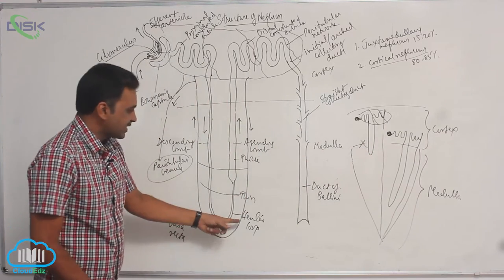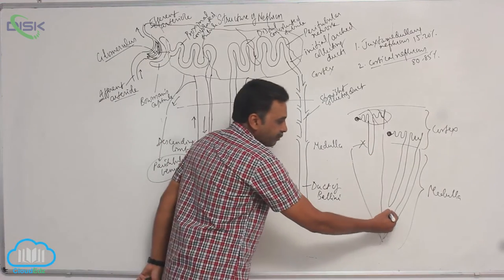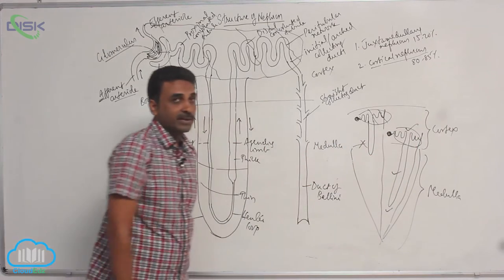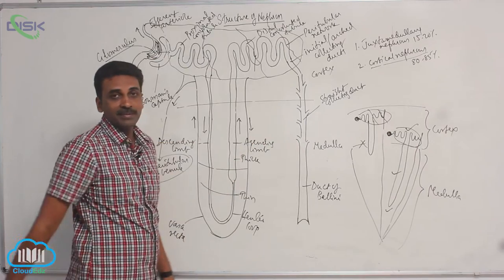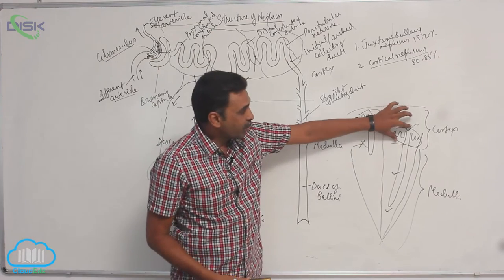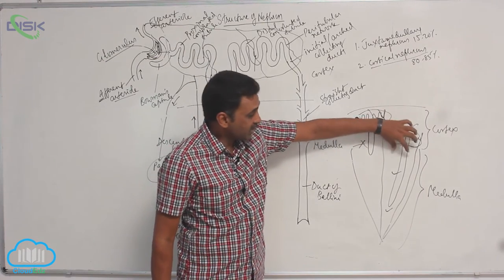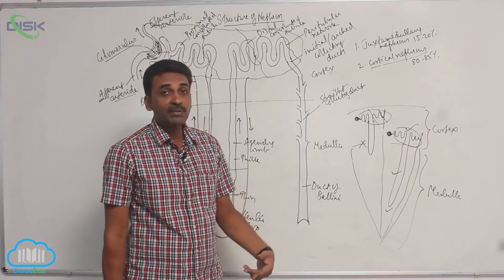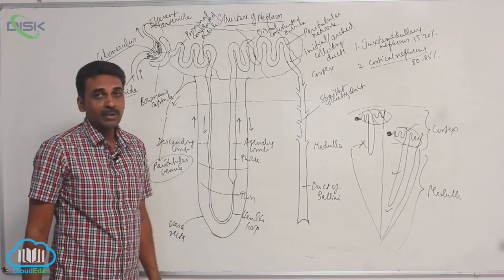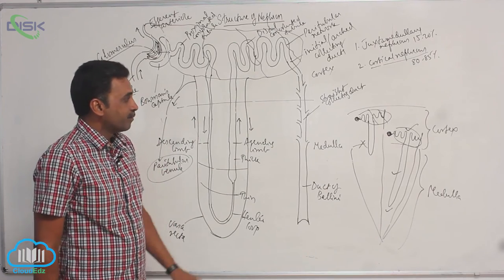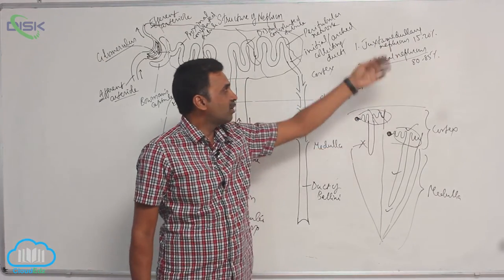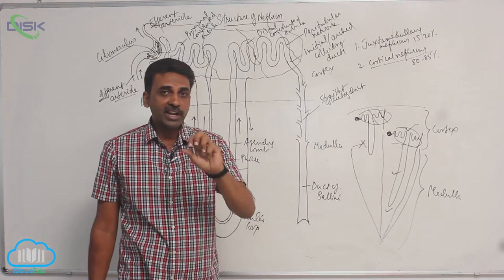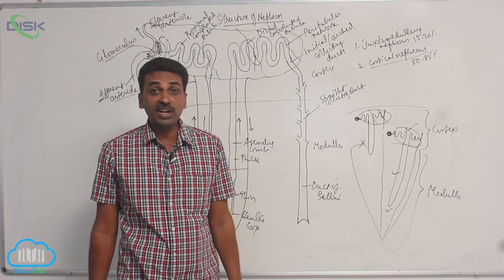In juxtamedullary nephrons, there is vasa recta, and the peritubular network is also present, so both networks are present. The peritubular network surrounds the proximal and distal convoluted tubules, while the vasa recta surrounds the Henle's loop. Juxtamedullary nephrons, though present in lesser number — 15 to 20 percent — are useful for both filtration and concentration of urine.